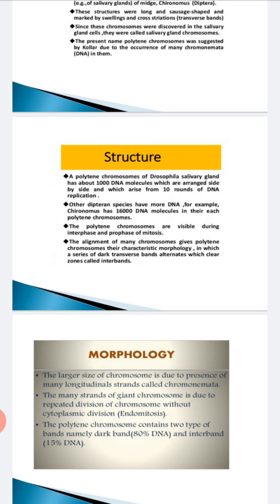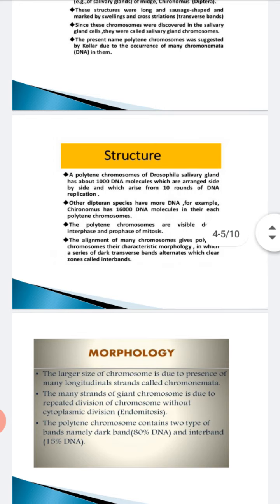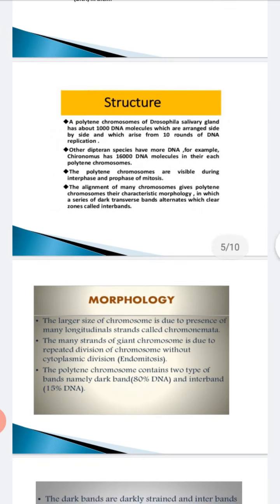The polytene chromosomes contain two types of bands. There are bands and inter-bands. In bands there is 80% DNA and in inter-bands there is 15% DNA. This question is also asked. The dark bands are darkly stained and inter-bands are lightly stained. Dark bands have more DNA and less RNA.